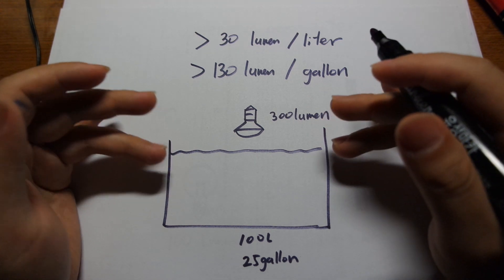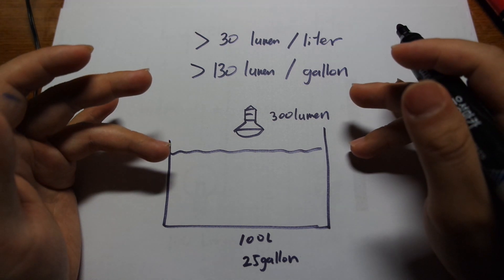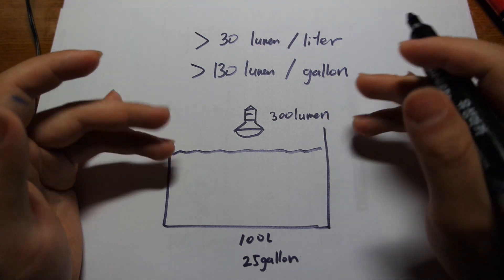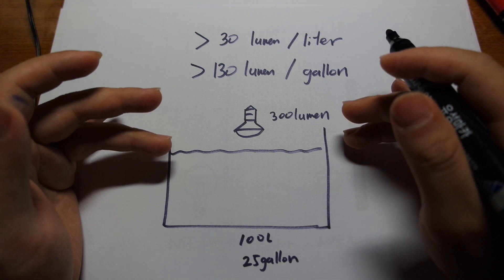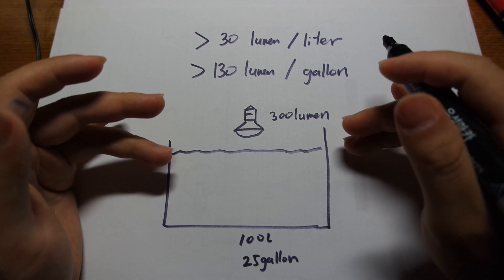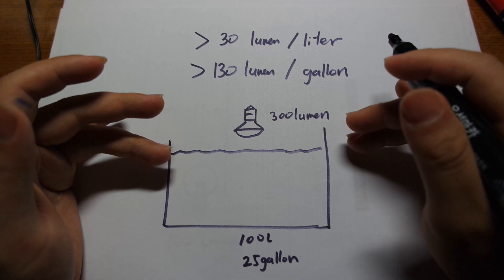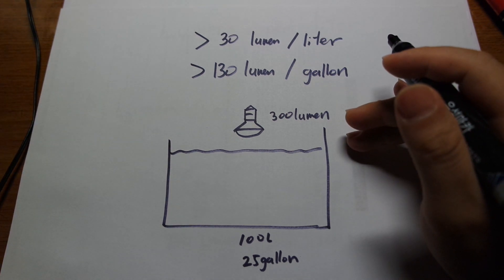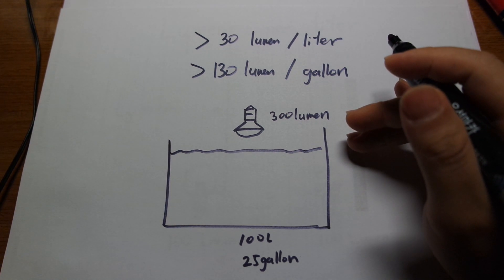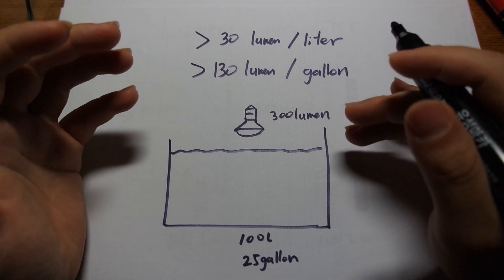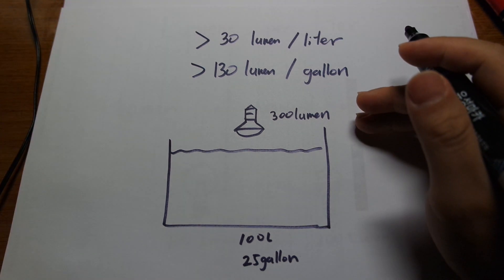Because we're just hobbyists trying to figure out whether a light bulb will grow plants — not trying to perfectly optimize the tank — if you just want a good estimation of whether a light bulb will grow plants, I think there is some use to lumens per liter despite its limitations.